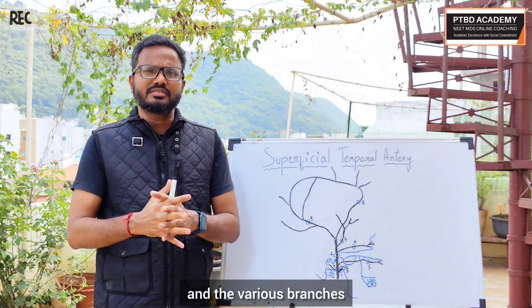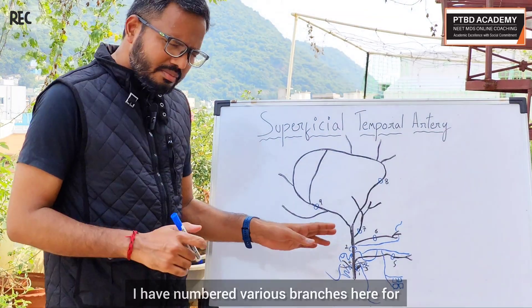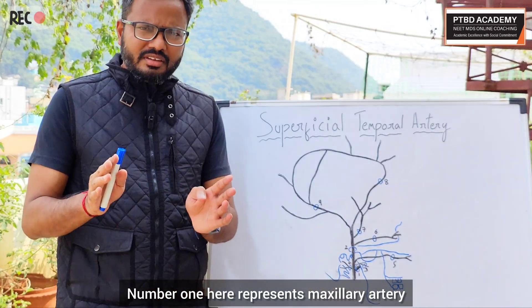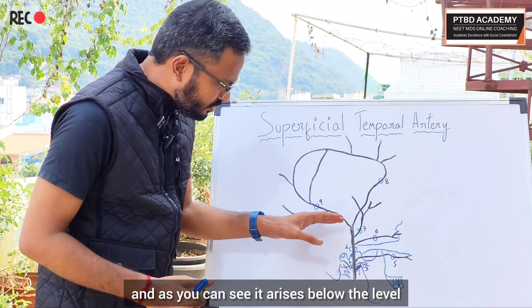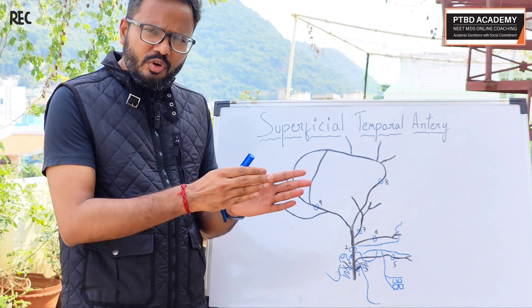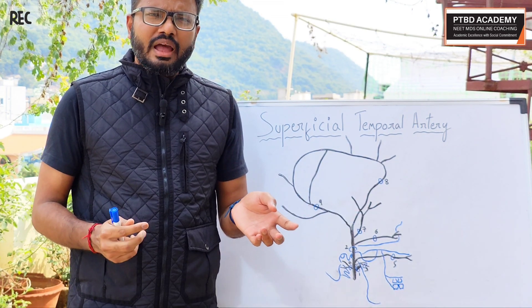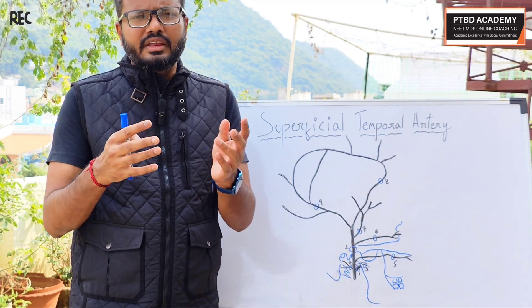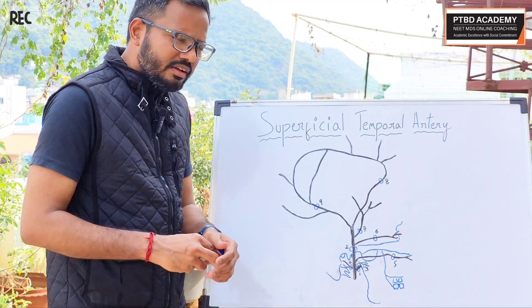Now let's look into the course and the various branches of the superficial temporal artery. I've numbered the various branches for easy communication. Number one represents the maxillary artery — it is one of the larger terminal branches of the external carotid and arises below the level of the temporomandibular joint, then goes along either laterally or medially to the lateral pterygoid muscle and ramifies in the pterygopalatine fossa. We'll discuss the maxillary artery in detail in a separate video. Number two represents the superficial temporal artery itself.